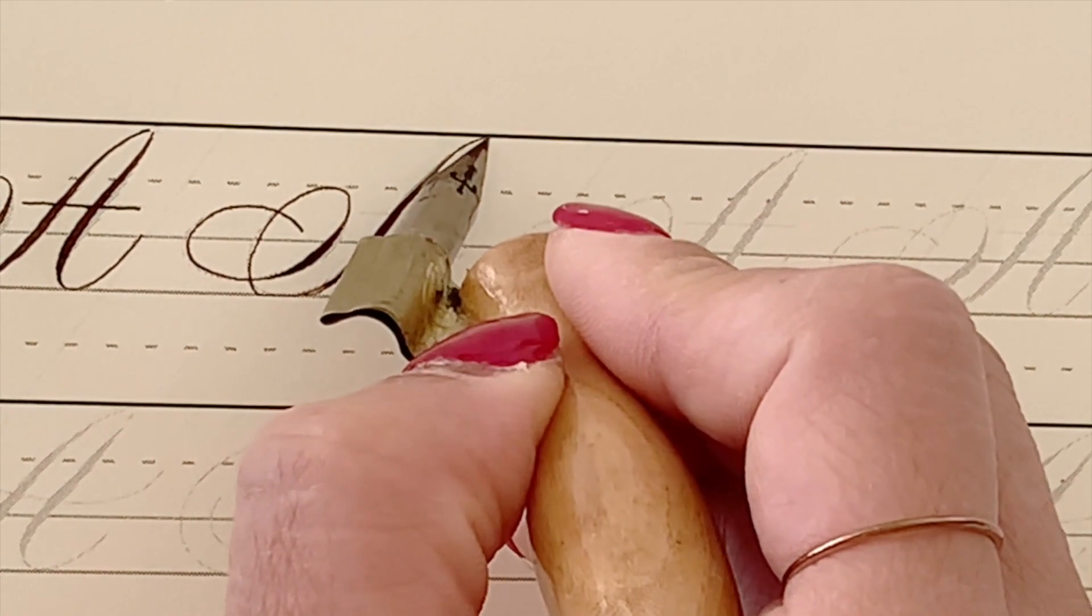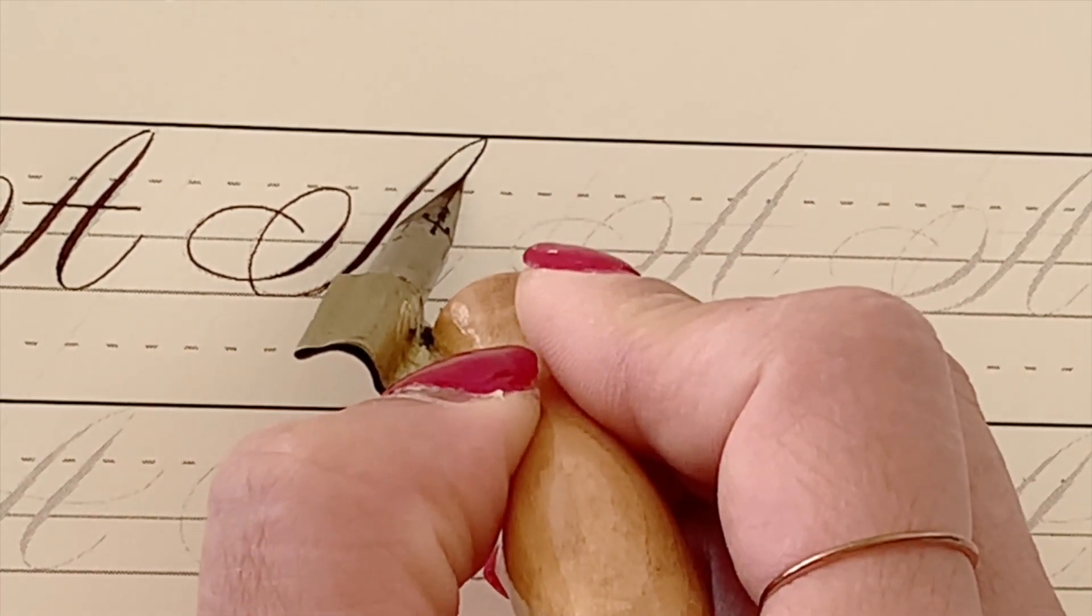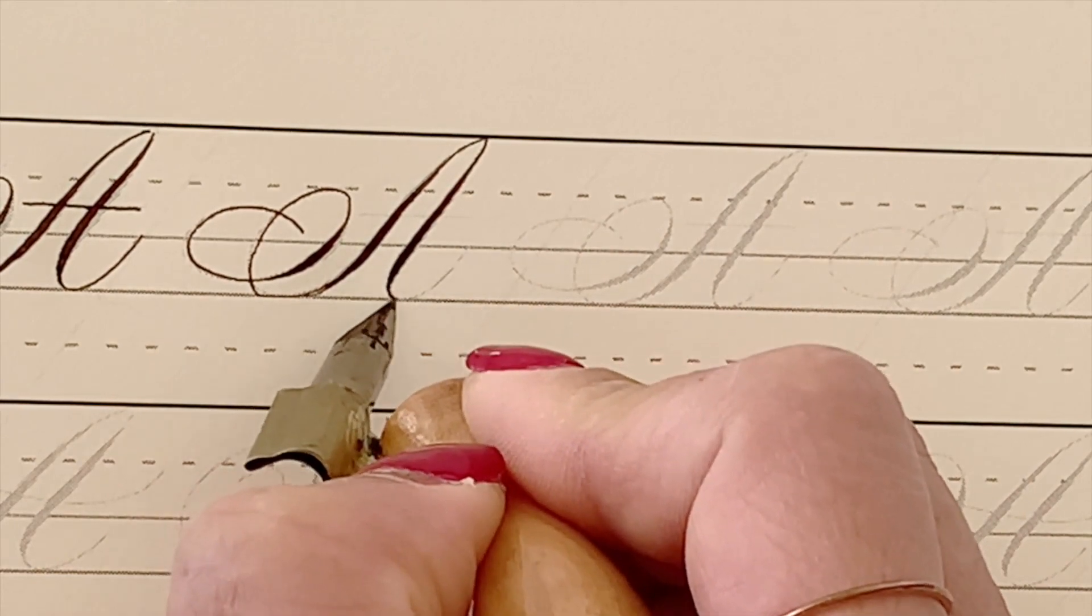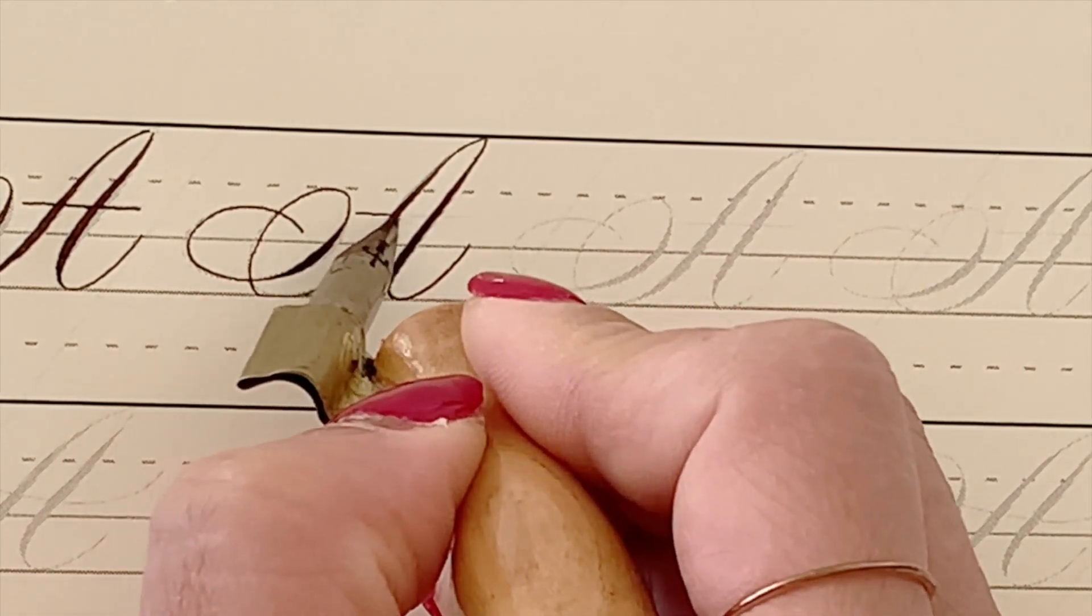Then the second line, just make sure you're coming down on the slant, lift, and then a crossbar.